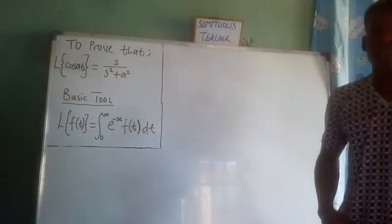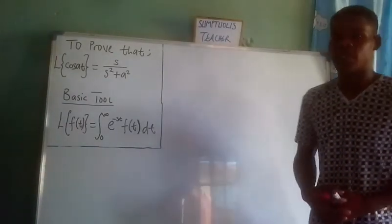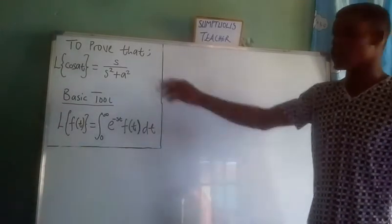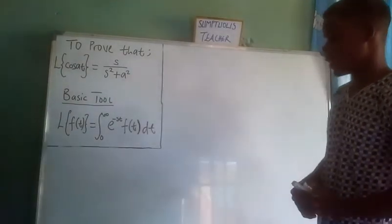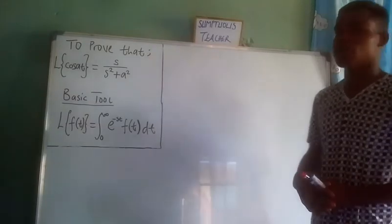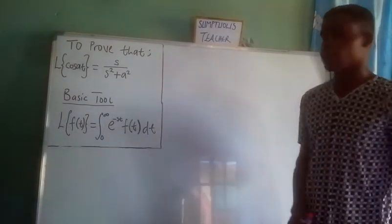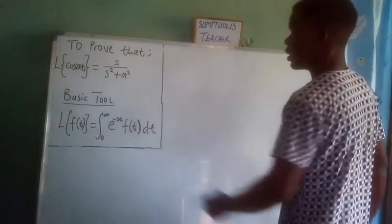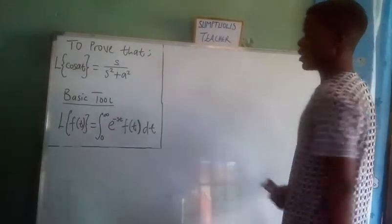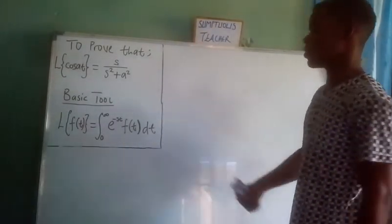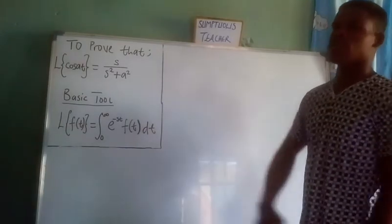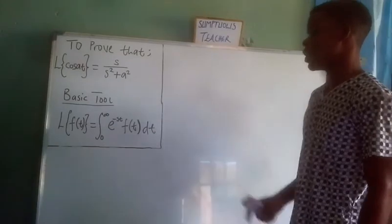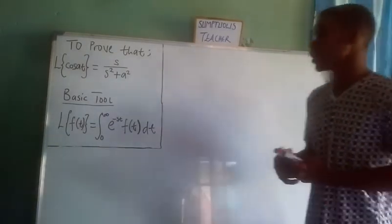Hello and welcome to this channel. In today's video we will be proving that the Laplace transform of cosine(at) is equal to s over s squared plus a squared. We are going to make use of the definition: the Laplace transform of a function of t is the semi-infinite integral from 0 to infinity of e to the negative st times the function of t with respect to t.